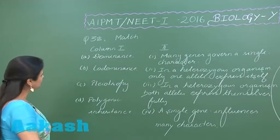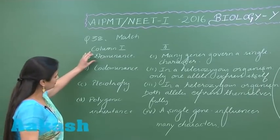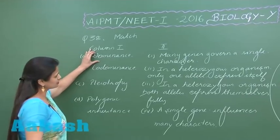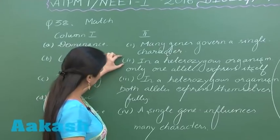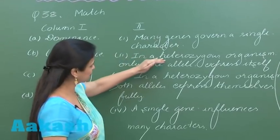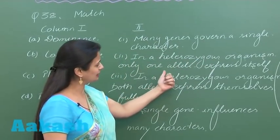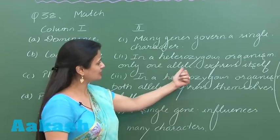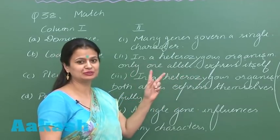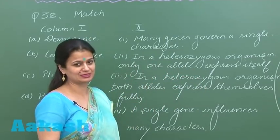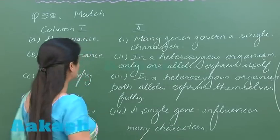Question number 38, we have to match the column. Dominance goes with option number two. In a heterozygous organism, only one allele expresses itself out of the two — the one that expresses itself. This phenomenon is known as dominance.